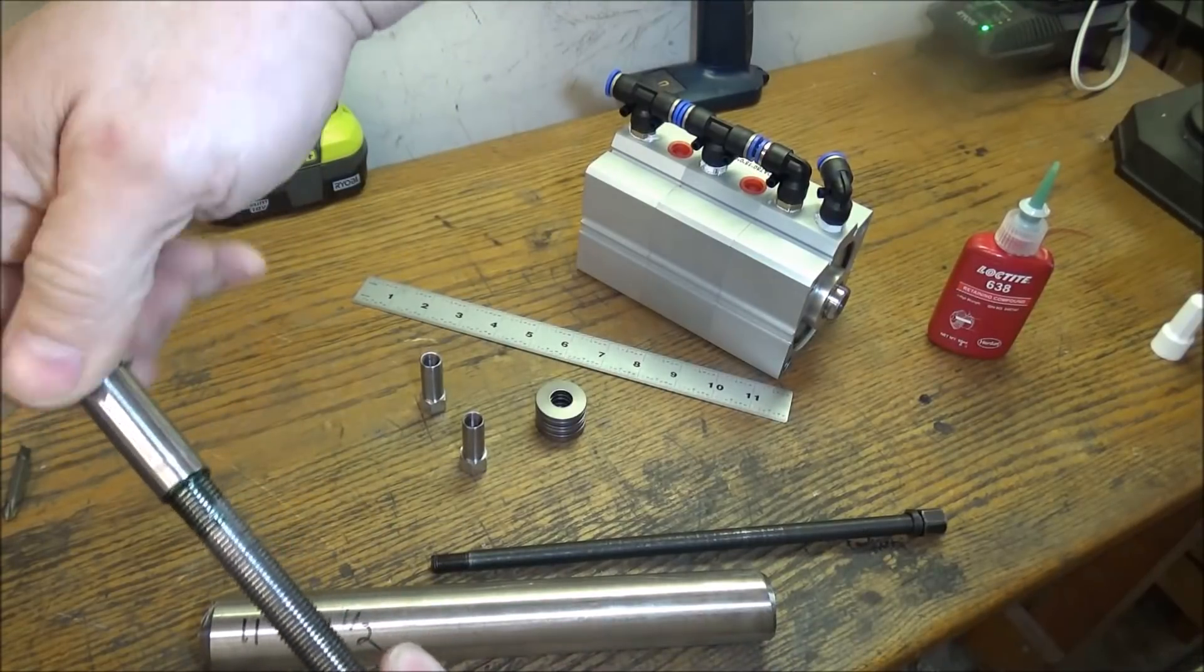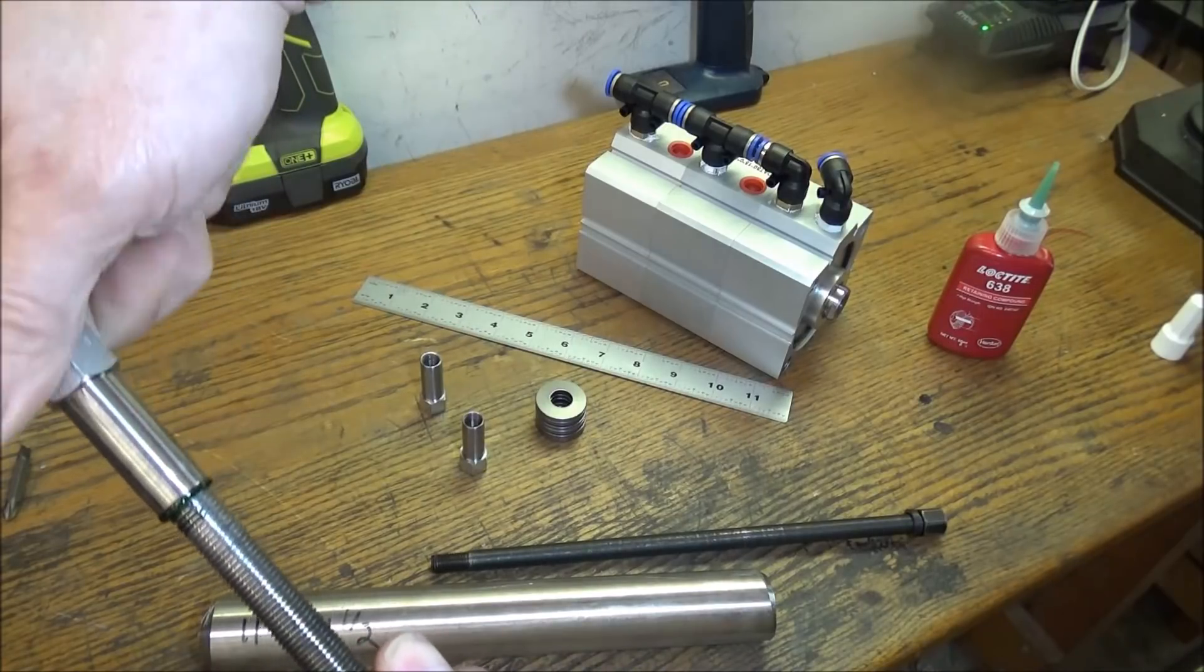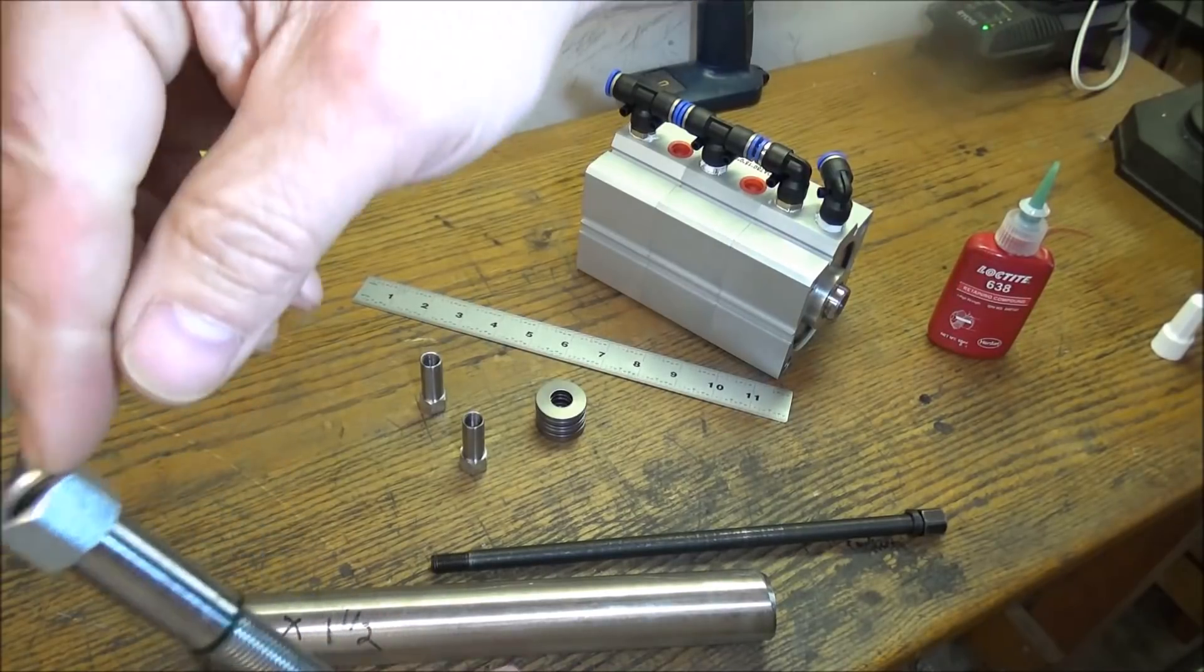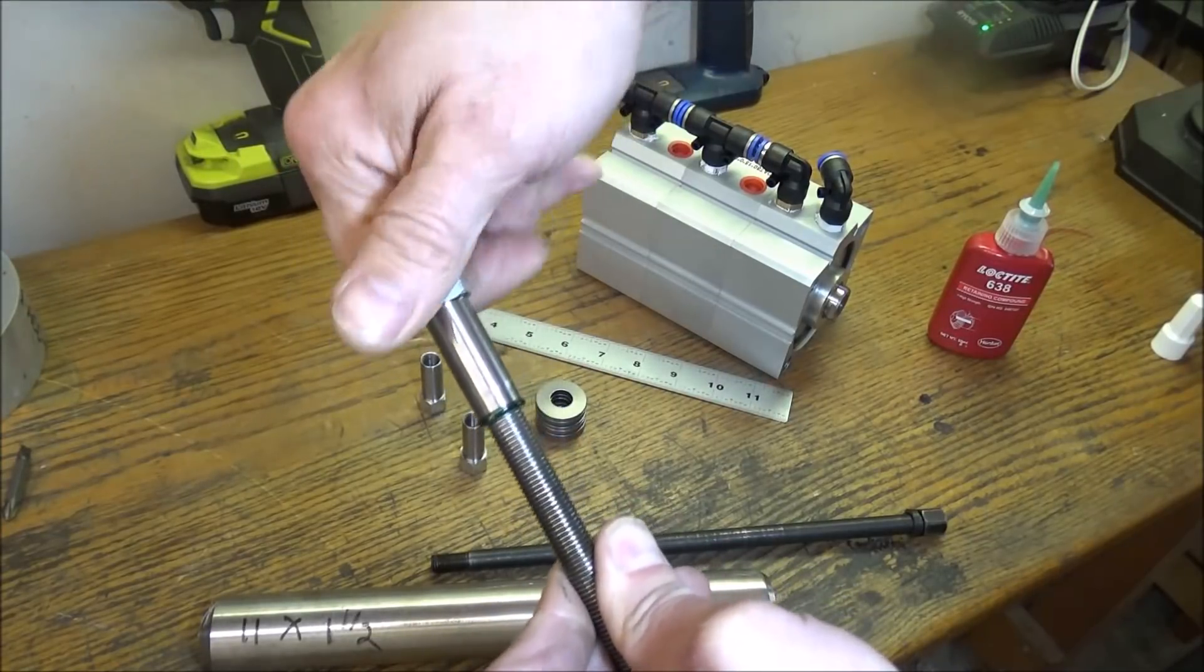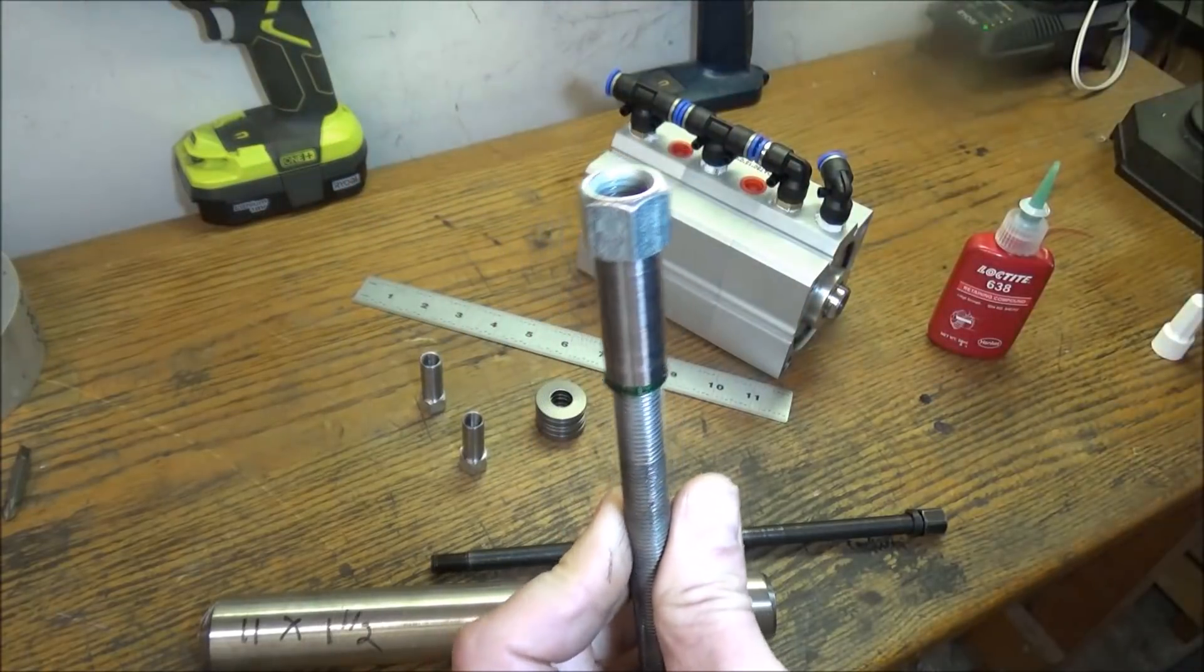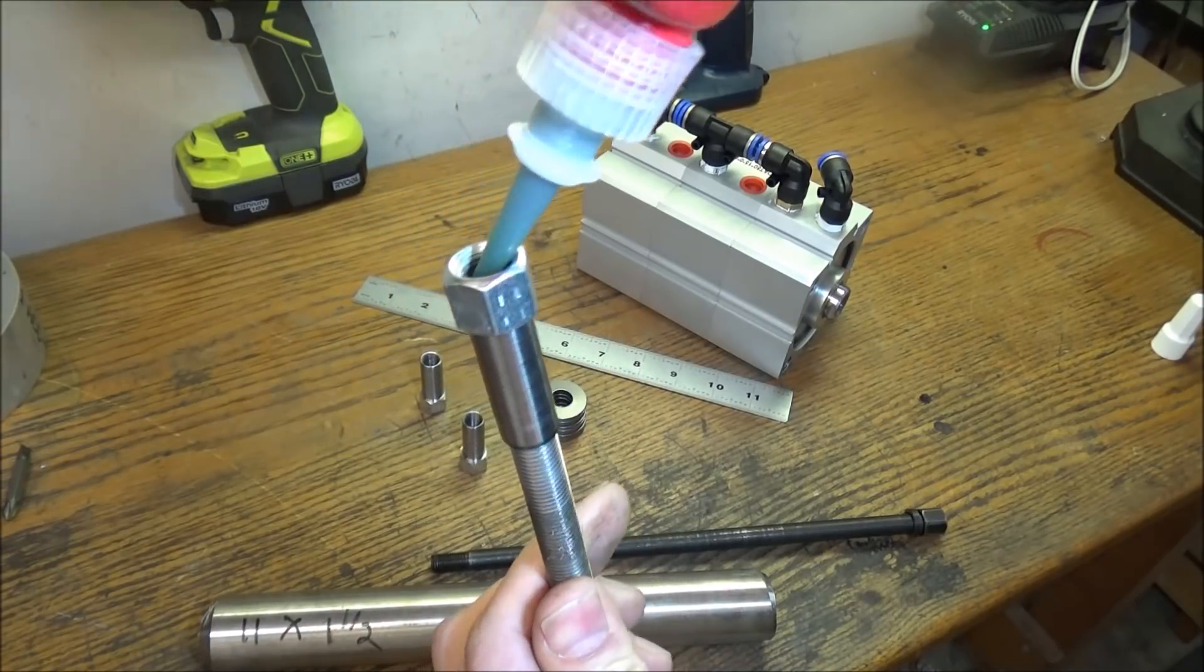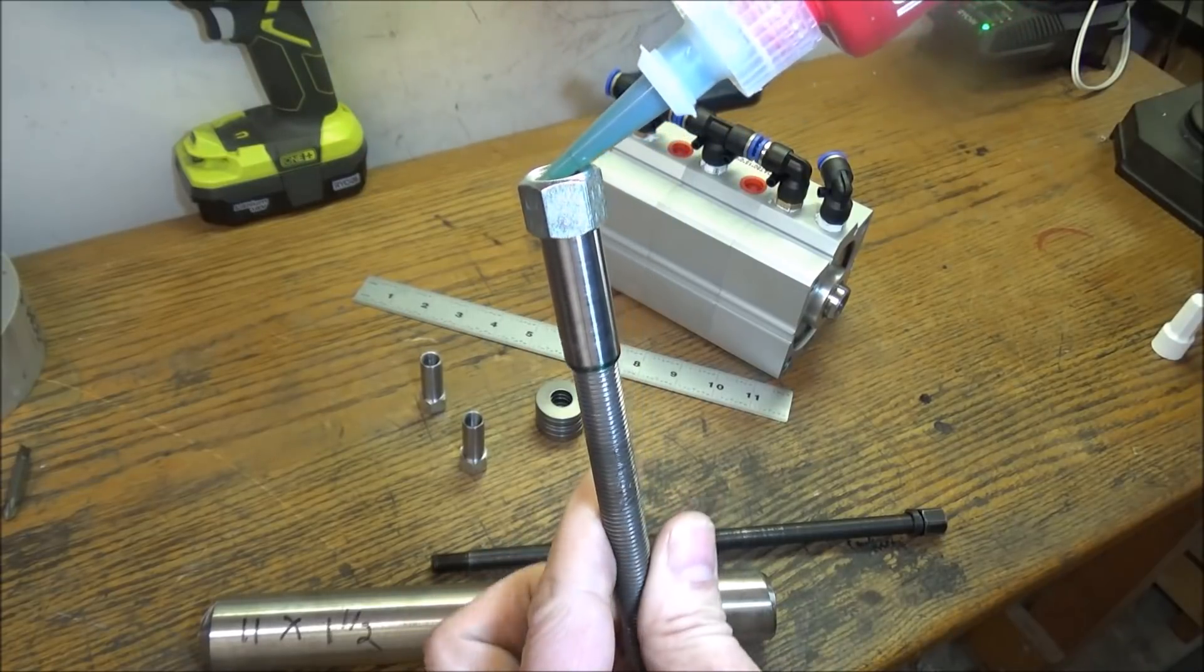I've cleaned these threads up real good with some carburetor cleaner, so hopefully we'll get good adhesion. I'm just going to screw it down until it's flush with the top here. And right before I get to the end, I'm going to put just a little bit more right here, just to make sure we've got enough in there.